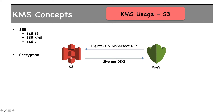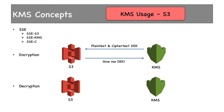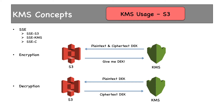The decryption process is exactly the opposite. We have S3 and KMS. S3 sends the ciphertext DEK and specifies the KMS key name. KMS decrypts the DEK and sends the plaintext DEK to S3. S3 uses this plaintext DEK to decrypt all its objects and removes the DEK from memory as soon as possible.